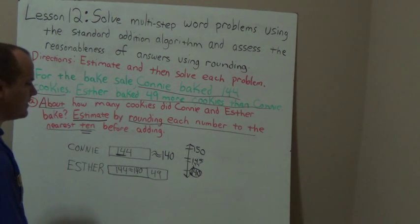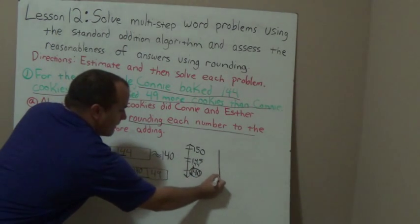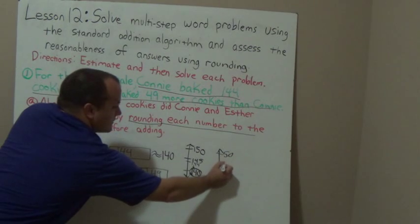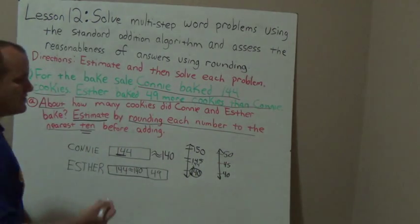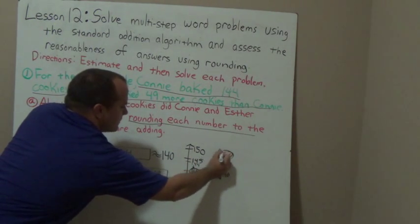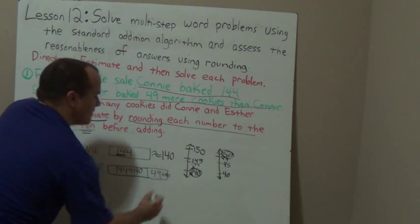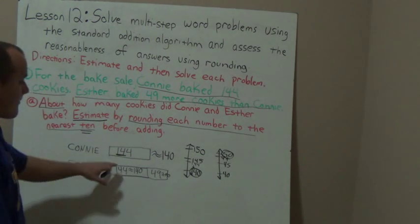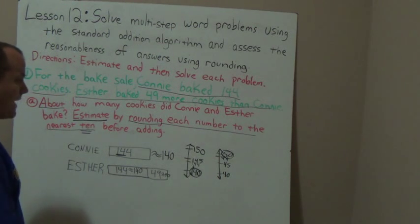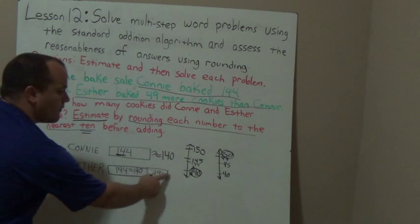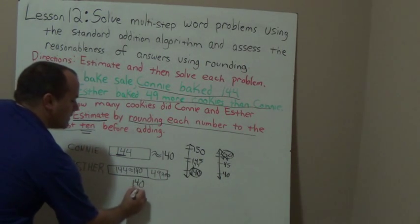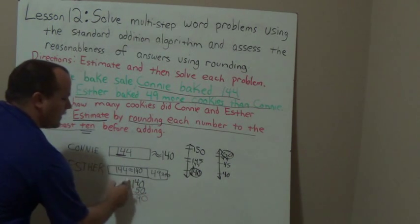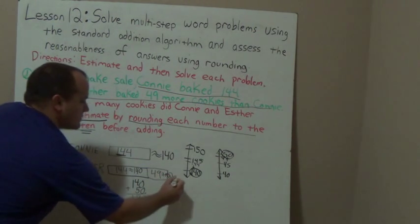Now I'm going to estimate 49 to the nearest 10. I'm going to draw another vertical number line at the tens: 40 at the bottom and 50 at the top. My midway point is 45. Where would 49 fit? 49 is just below 50, so it would round to 50. So 49 is about 50. Now to figure out about how many cookies Esther has, I'll add 140 plus 50. I'm going to line my numbers up — ones with ones, tens with tens. Zero plus zero is zero. Four plus five is nine. Drop the one down. So Esther baked about 190 cookies.